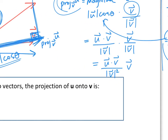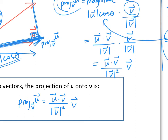The projection of u going in the v direction is u·v over magnitude of v squared times v. You have to memorize that formula. Notice: you have u·v — the dot product is commutative so order doesn't matter. This is u going in the v direction, so v is what we care about, and there are more v's than u's. If they ask for projection of v in the u direction, you change the formula accordingly.